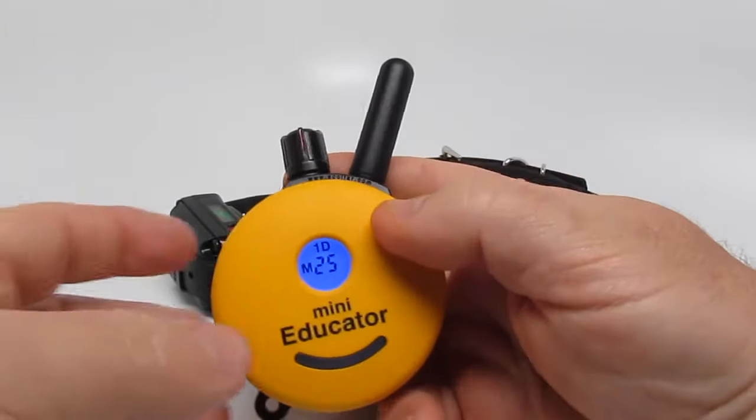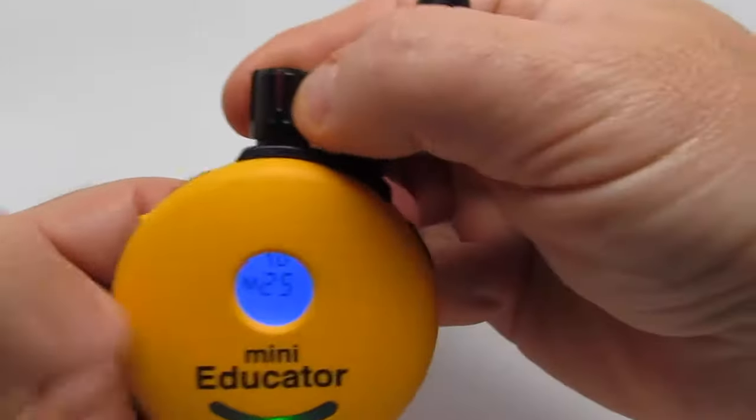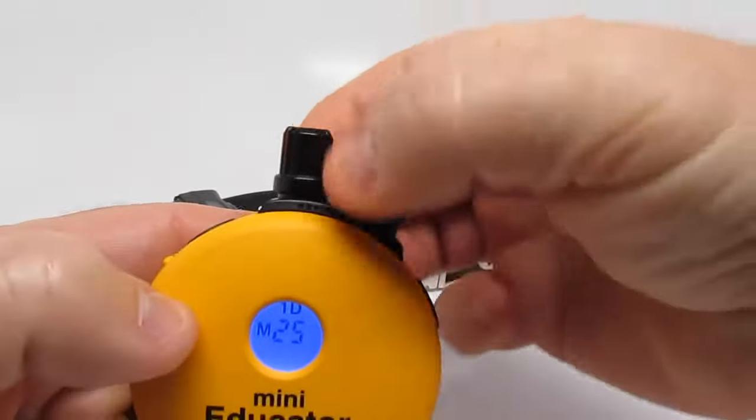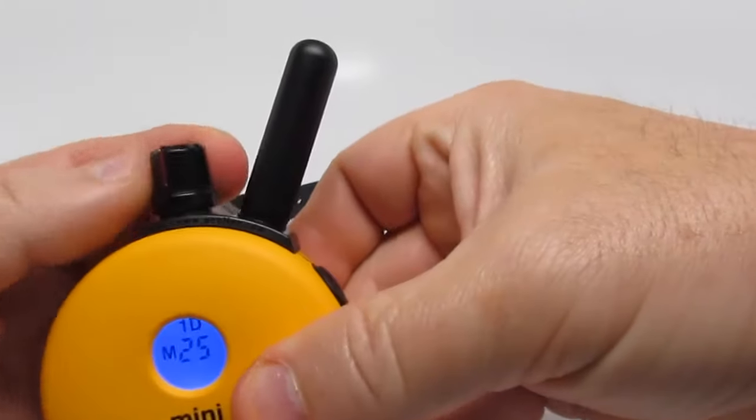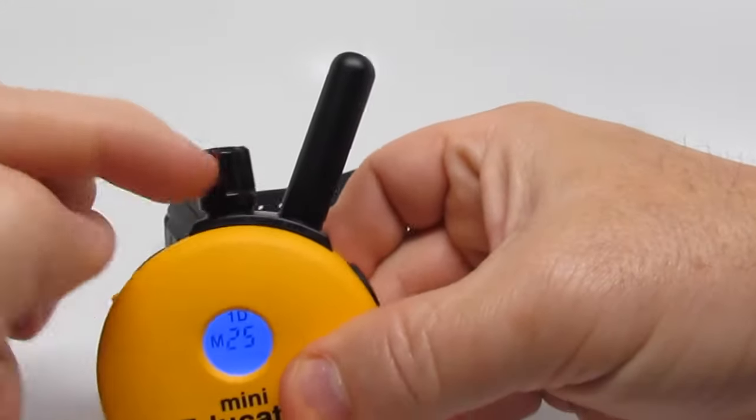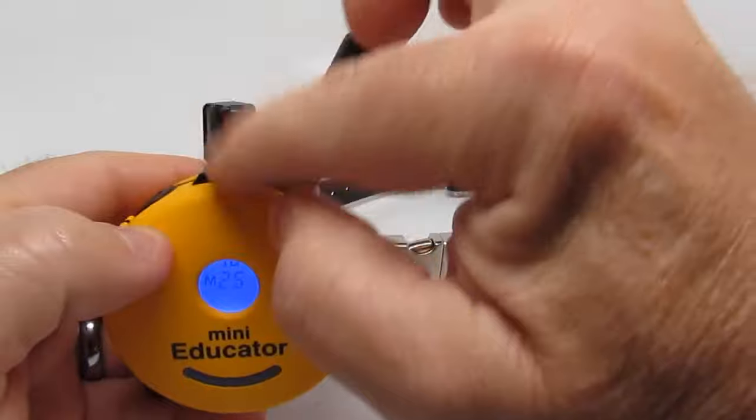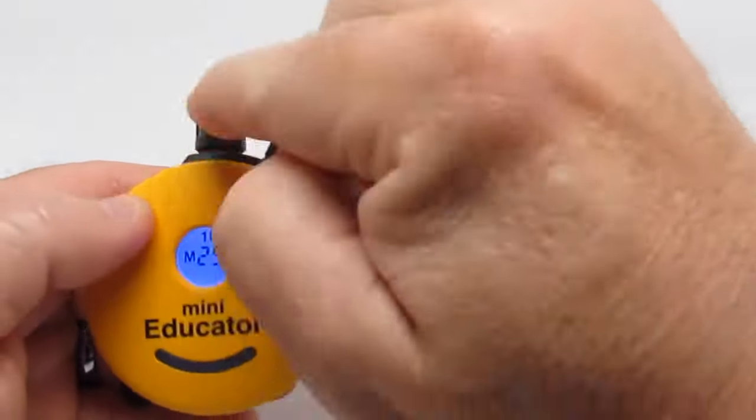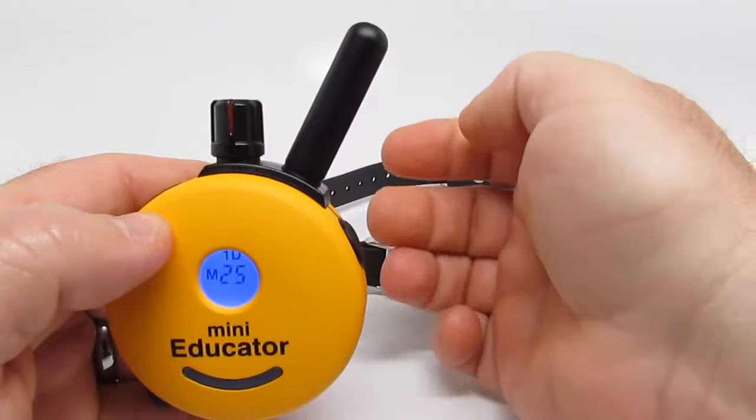So we want to change that. First thing you want to do, if you can see the red line here, that means it's on zero. This red line has to be vertical with the LED.